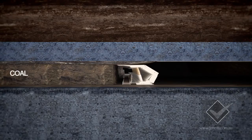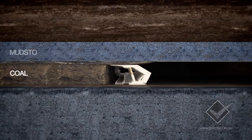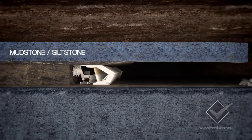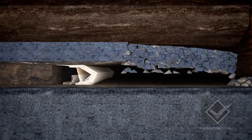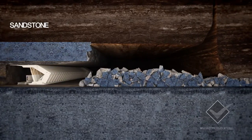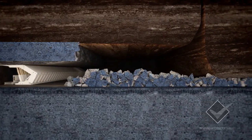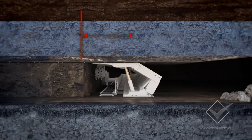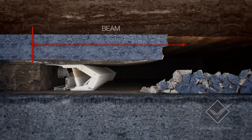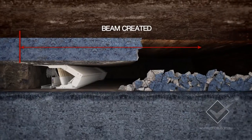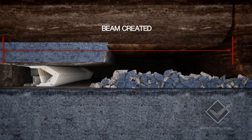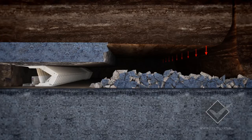As the longwall continues to advance, the intermediate mudstone and siltstone will cave or goaf. However, this will still leave the higher level sandstone above the supports and the face to form a beam. The beam typically begins over the top of the coal block, extends over the face line, and continues over the supports and out into the goaf.